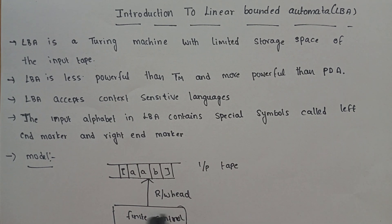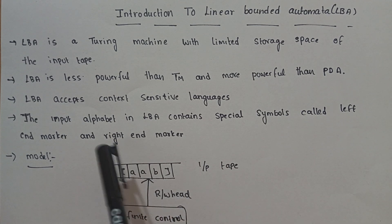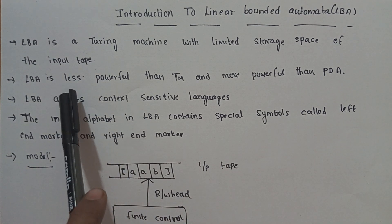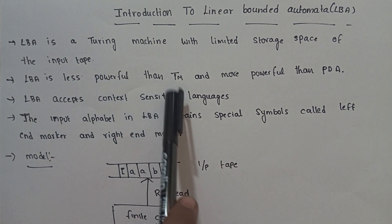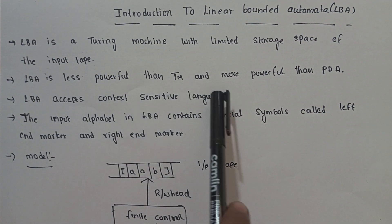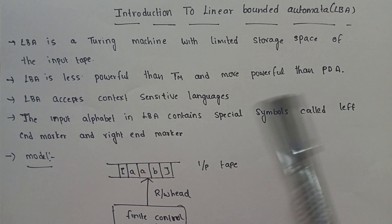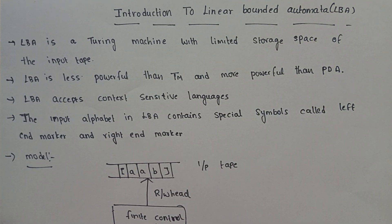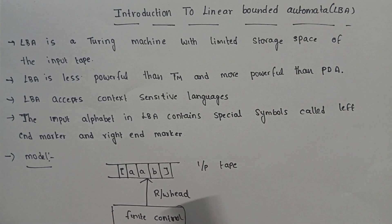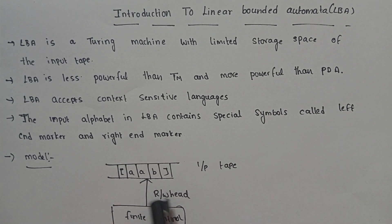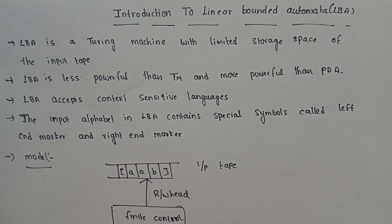This is the linear bounded automata. Linear bounded automata is less powerful than a Turing machine and more powerful than a pushdown automata. It is a restricted version of the Turing machine, and it is more powerful than a PDA.